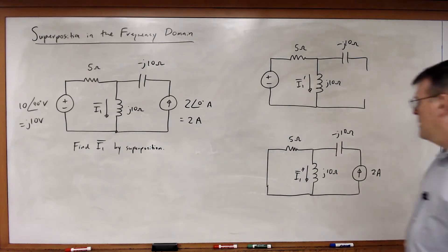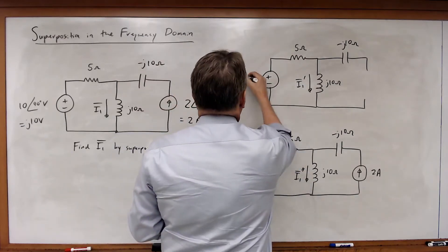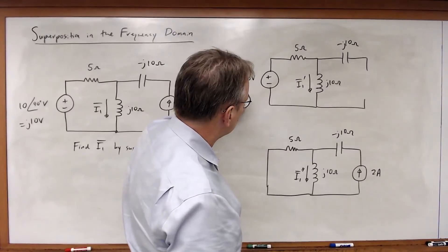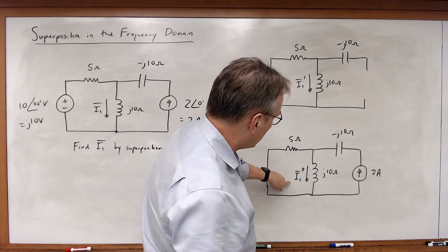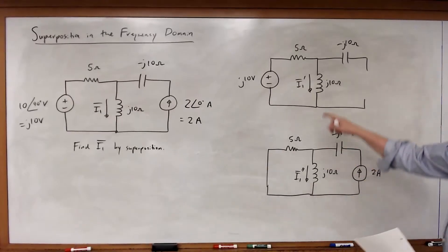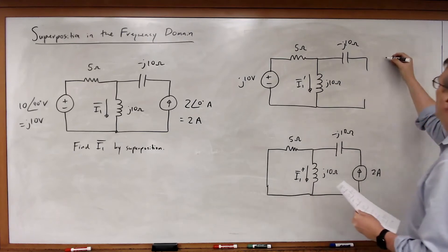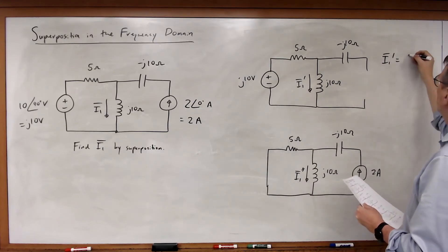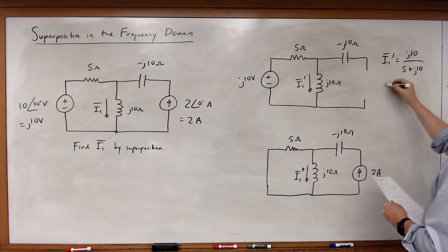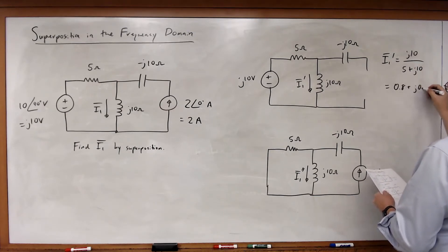If we were to solve for each of these, they would be basically pretty straightforward. I'd want to first find I1 prime due to the J10 volt source. This is simply going to be Ohm's law. I1 prime will be equal to J10 divided by 5 plus J10, and that will be equal to 0.8 plus J0.4 amps.